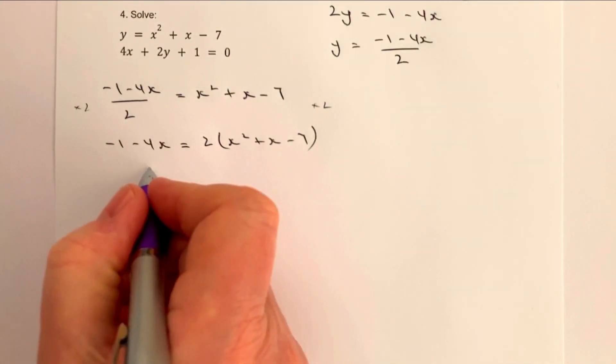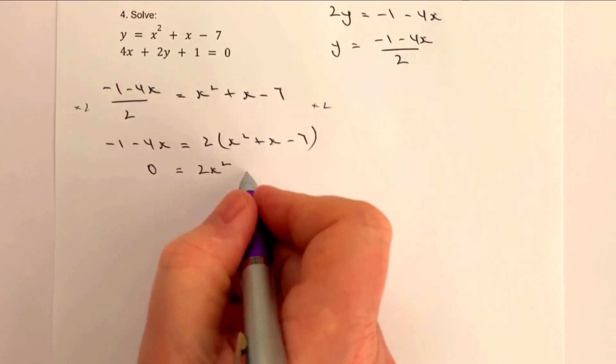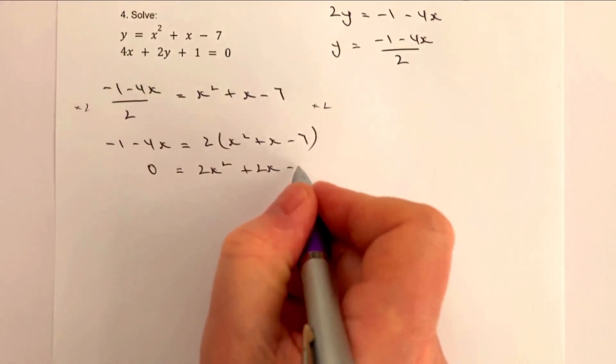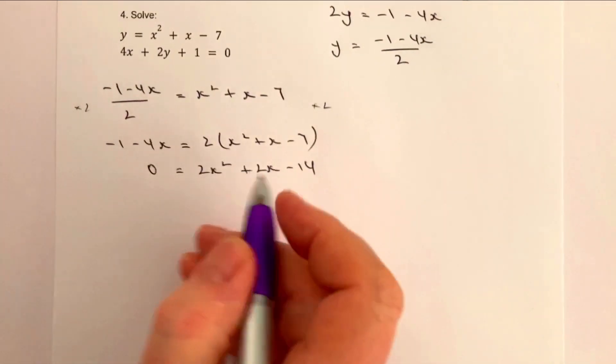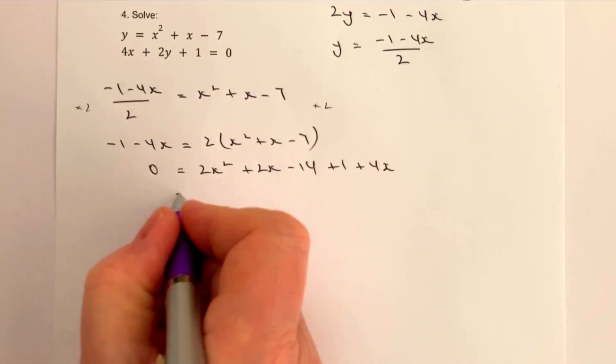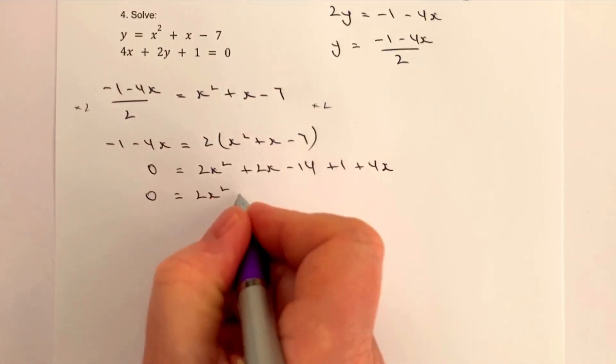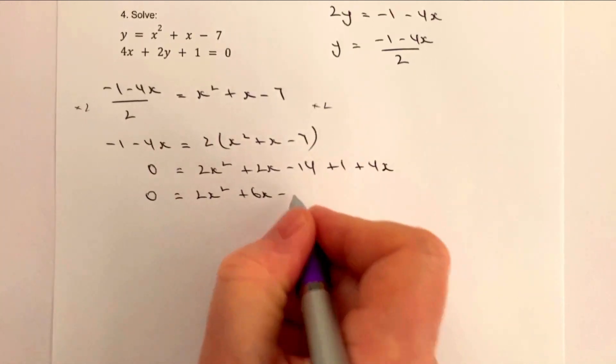So I need to make it equal to zero, so I know that's going to be 2x squared, I've also got plus 2x minus 14, I'm going to bring these over, it's going to be plus 1 plus 4x. Okay, so tidy that up a little bit and I'm going to get zero equals 2x squared plus 6x minus 13.